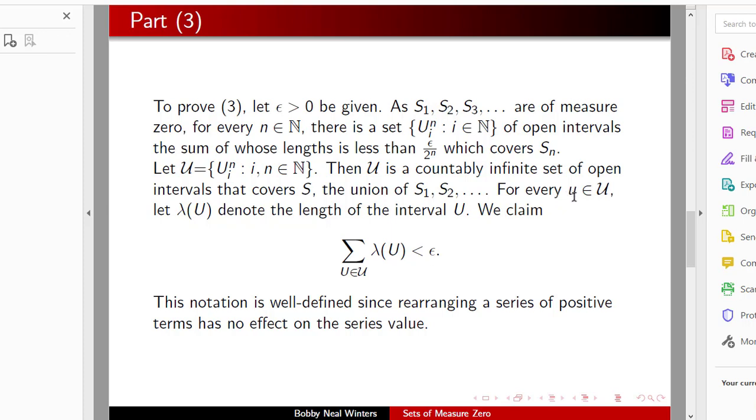Now for every open set U that is in script U, let lambda of U denote the length of that interval. We claim that the sum of all of these lengths is less than epsilon, and this notation is well defined because rearranging a series of positive terms has no effect on the value.